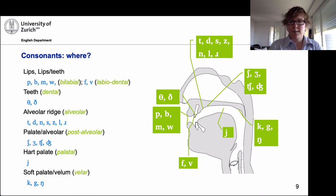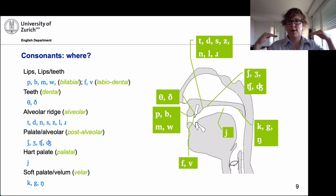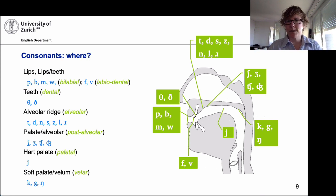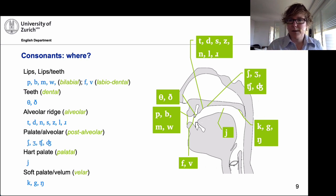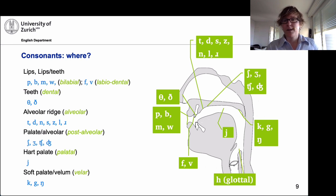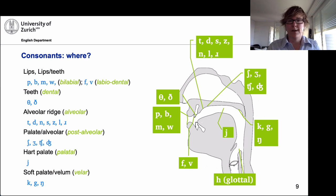Then we have the soft palate — the velum — that's where your tongue moves upwards to produce K, G, and the NG sound. If you overdo it, you notice that velar sound. And then the glottal sound — the H — is produced down in the larynx. So we've covered the where, and now we quickly go through the how: if sounds are produced in the same place, how do they differ?